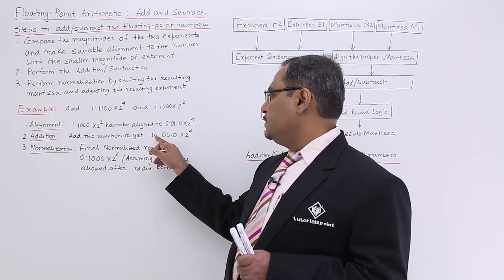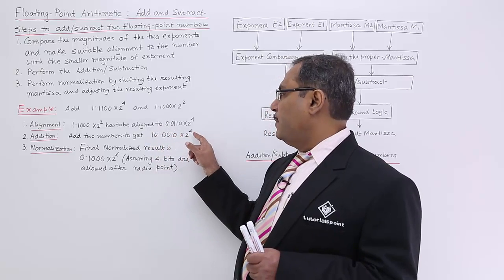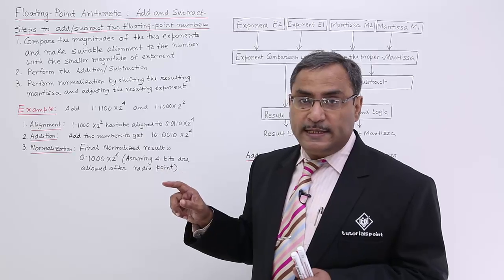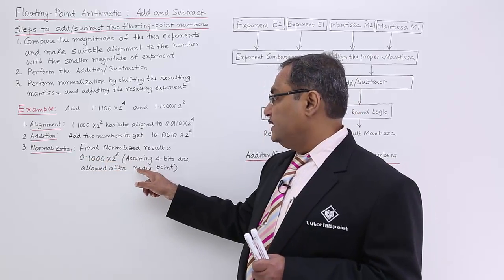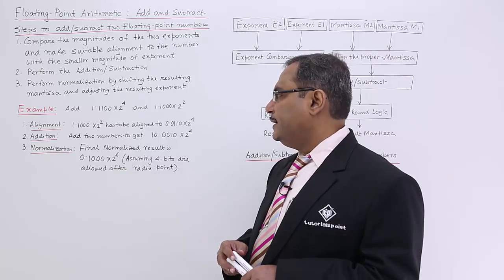I am just putting this 1 and 0 after this radix point, so my exponent will become 2 to the power of 6 in that way. In this way it is there, assuming 4 bits are allowed after the radix point.